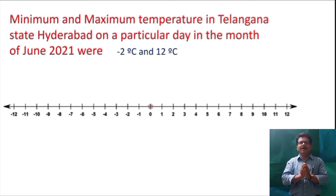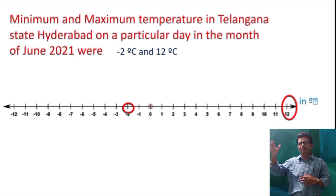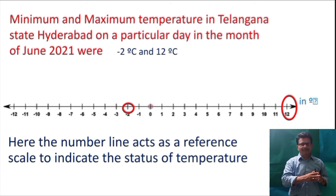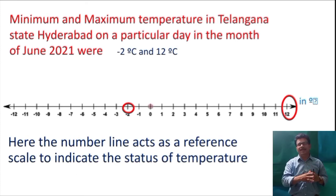So here I am taking number line. You know number line having 0 right side positive integers and left side negative integers. Now where is minus 2 degrees Celsius? Here. So like this by using this scale number line, this is the reference scale to the temperatures. So here we are using this number line as a reference scale to these temperatures.